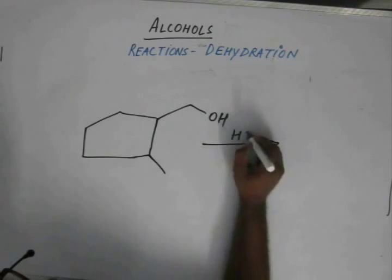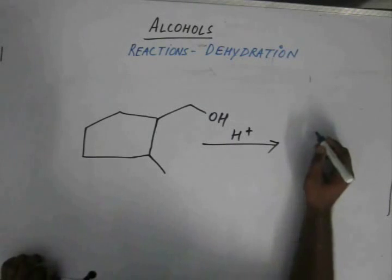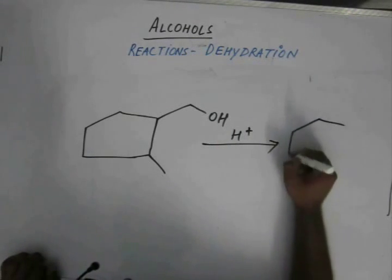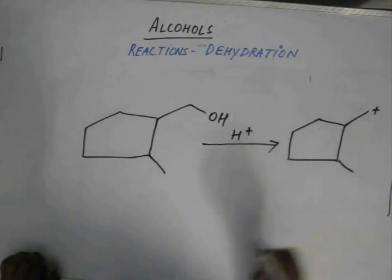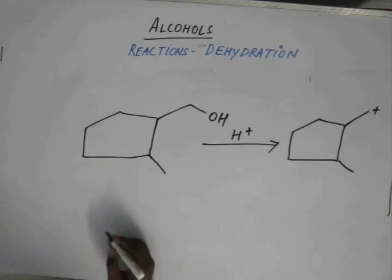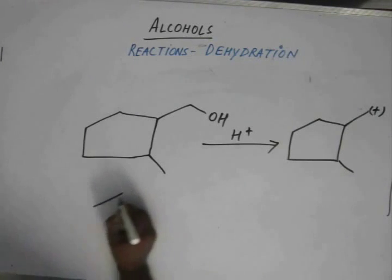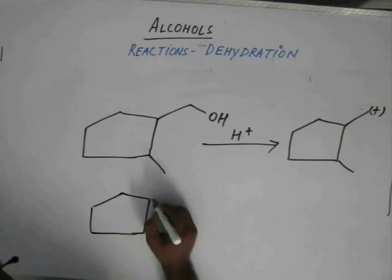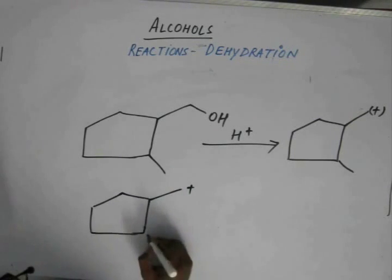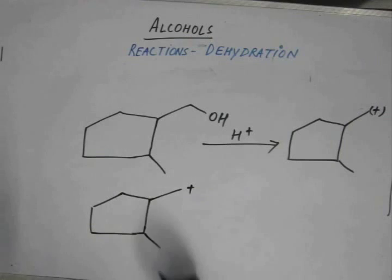As usual, we have acid, so this would generate the carbocation like this. Now, the big question is: which bond is going to cleave for the ring expansion? This one or this one?